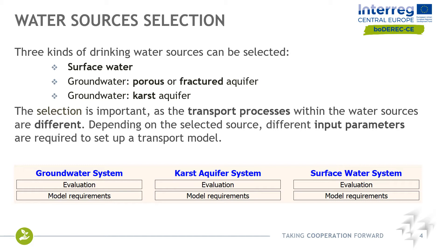Considering the water sources selection, there are three kinds of drinking water sources. They are selected according to the case studies used in the INTERREG project BODREG-C. Our case studies are grouped into surface water case studies, groundwater case studies where the water derives mainly from porous aquifers — though similar concepts apply to fractured ones — and case studies in which the drinking water derives from a karst system.